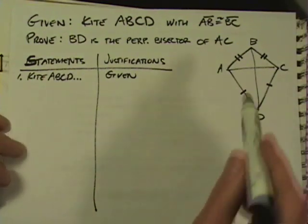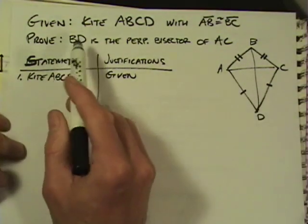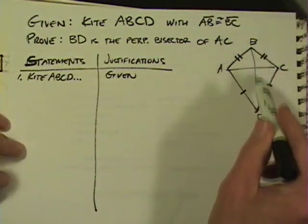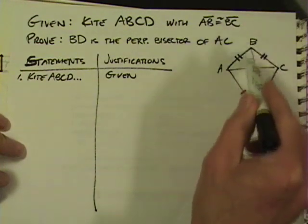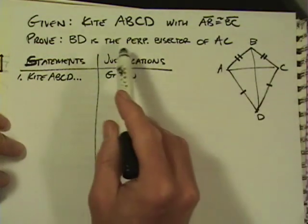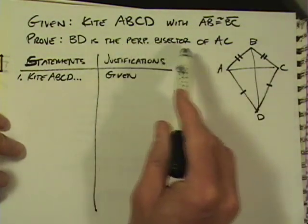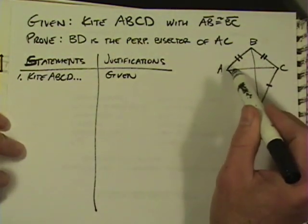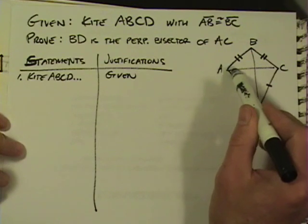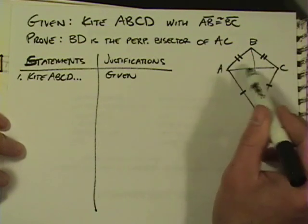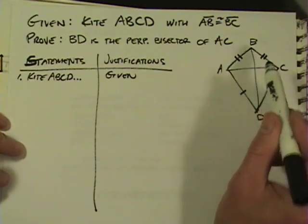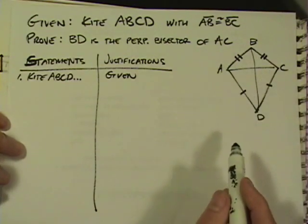And we're trying to prove that the diagonal BD — this diagonal BD — is the perpendicular bisector of AC. That is, it cuts AC into two equal parts and is at 90 degrees, a perpendicular angle.